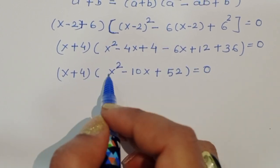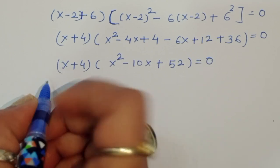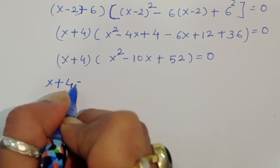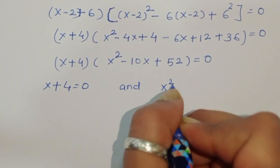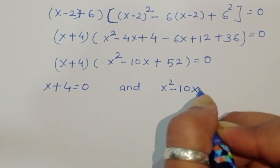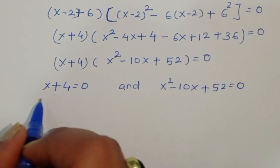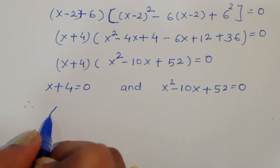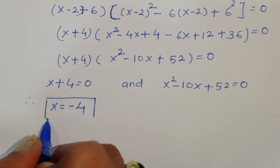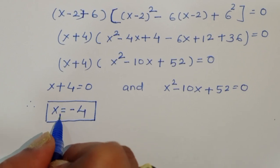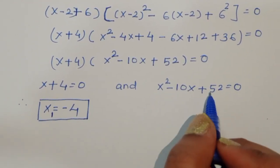Now we got two equations: first, x plus 4 equals 0, and next, x² minus 10x plus 52 equals 0. From the first: x plus 4 equals 0, therefore x₁ equals minus 4. This is the first value of x.